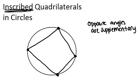And so what that means is that if we call these angles A, B, C, and D, we know that the measure of angle A plus the measure of angle C equals 180 degrees.